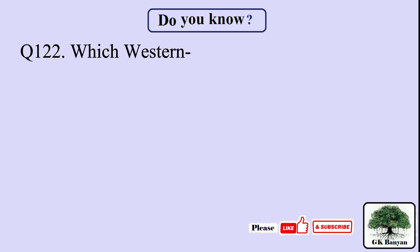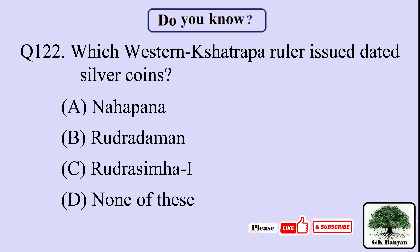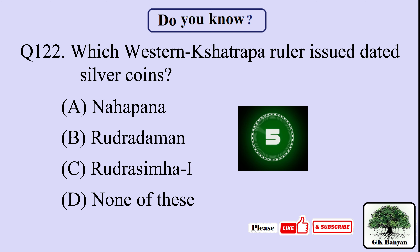Question 122. Which Western Kshetrapa ruler issued dated silver coins? Your options are: A. Nahapana, B. Rudra Dhamman, C. Rudra Simha the First, D. Kanishka.